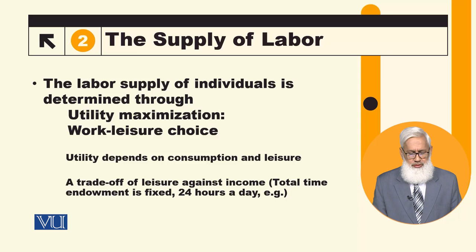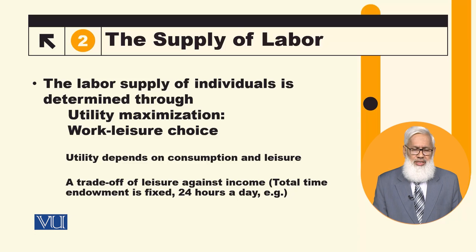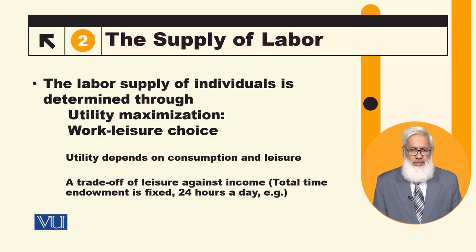Basically, two things depend on utility: number one, consumption; number two, leisure. The relationship between consumption and work is that income determines consumption, and there is a trade-off between work and leisure.